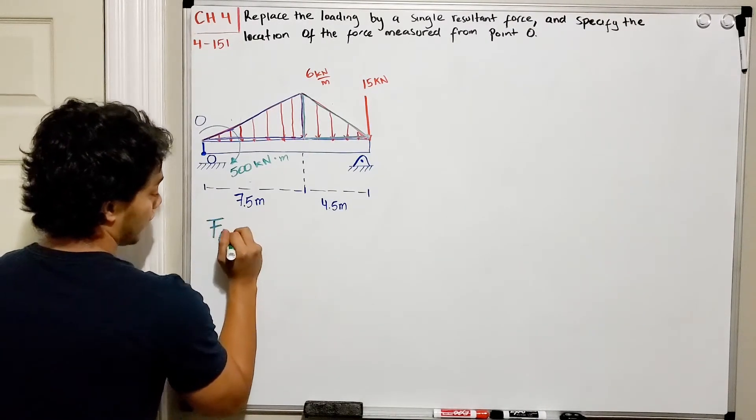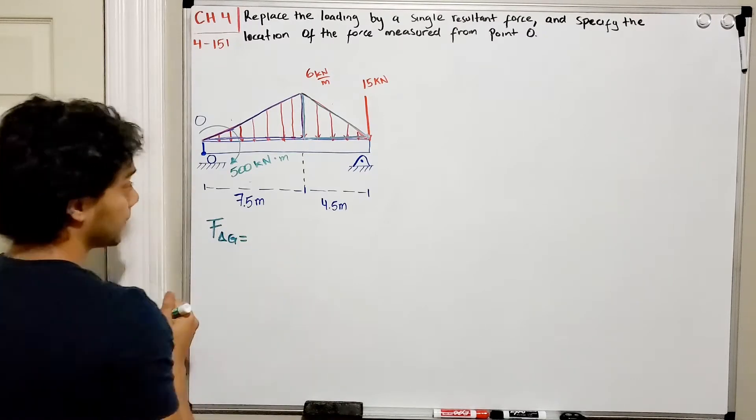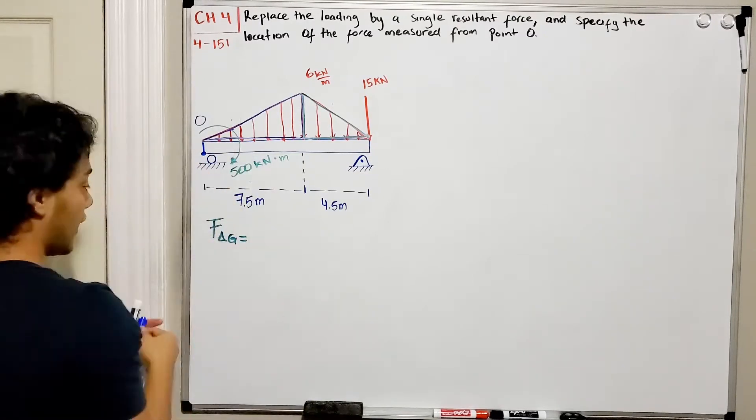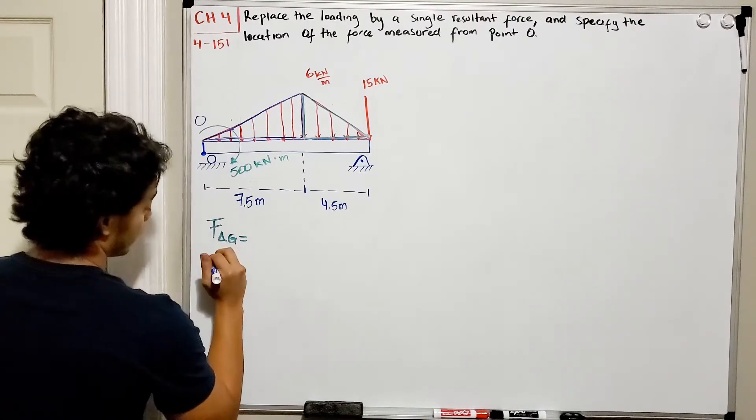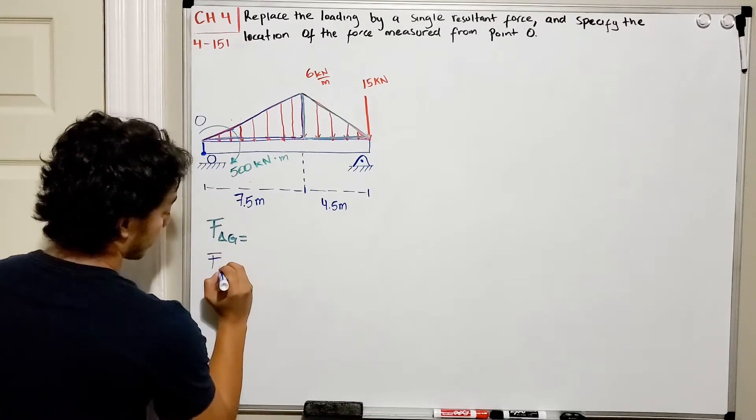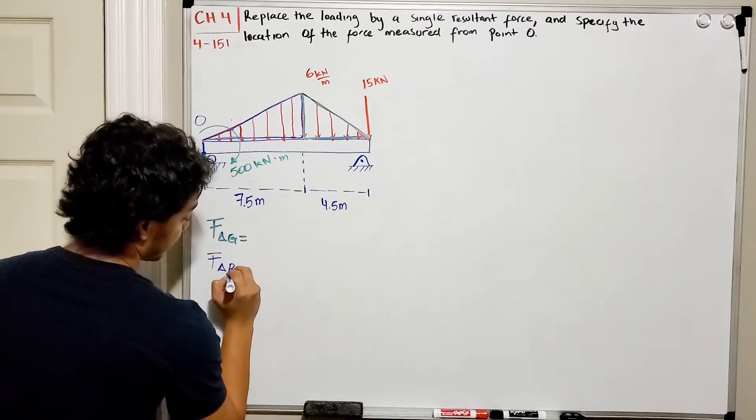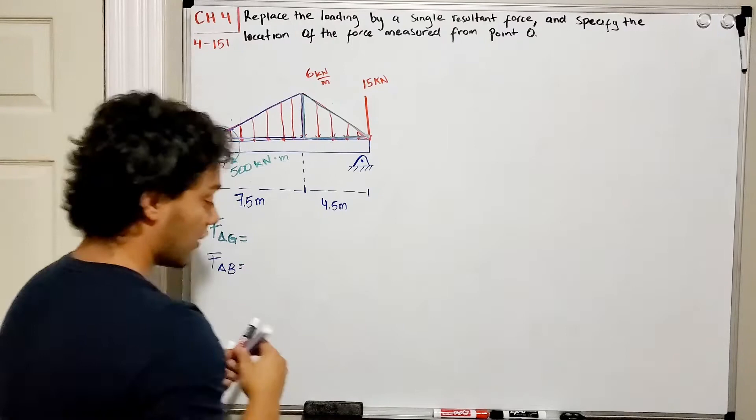This one over here is going to be my triangular force green, so I'm going to call it F_triangular_G for green. The one on the left is my F_triangular blue.